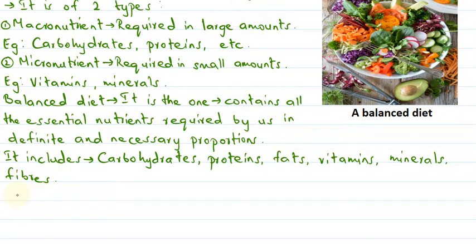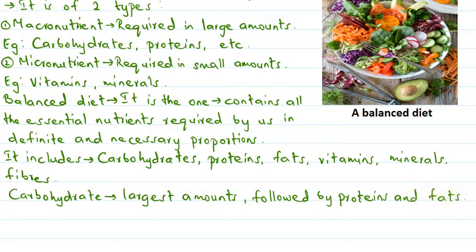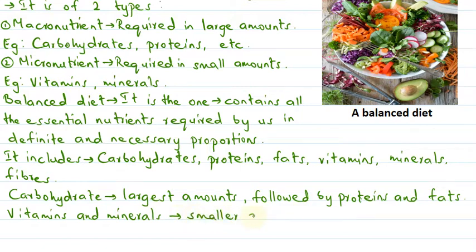The different nutrients are required in different proportions. Carbohydrates are required in the largest amounts, followed by the requirement of proteins and fats. Vitamins and minerals are required in smaller proportions or smaller amounts by our body.